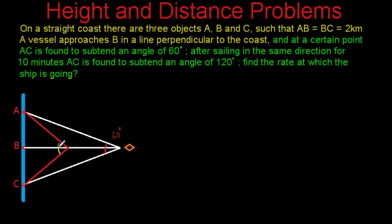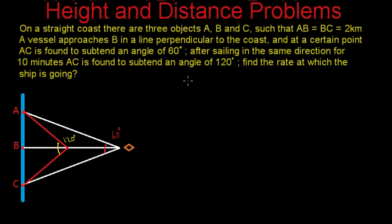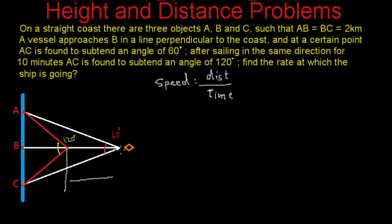We have to find the rate at which the ship is going, i.e., the speed of the ship. The formula for speed is distance divided by time. We know the time is 10 minutes, and in 10 minutes the distance covered by the vessel is the segment between its two positions. If we call the first position D and the second position E, then finding that distance gives us the speed.